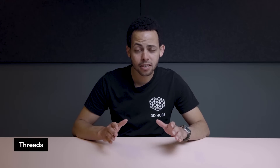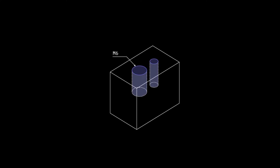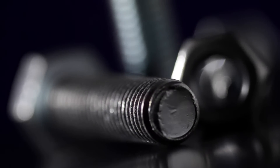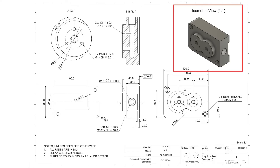Next up, threads. For thread sizes, we recommend M6 or larger; the minimum size is M2. Choose the largest thread possible as they are easier to machine. For thread length, we recommend 3x the nominal diameter, with a minimum of 1.5x the nominal diameter. The majority of load on a thread is taken by the first few teeth, so threads longer than 3x the nominal diameter are unnecessary. Always design threads as cosmetic in your CAD package and include a technical drawing with your order.